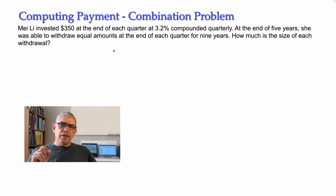Hello students! In this video I continue to explain how to compute the periodic payment in an annuity. This time I will be using a combination problem — a problem that combines two different periods. A combination problem could have a period with only compound interest working, and another period in which there is an annuity.